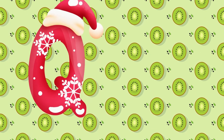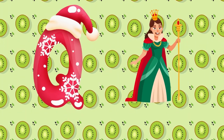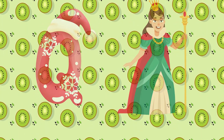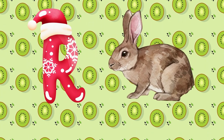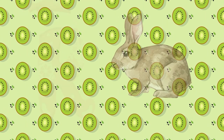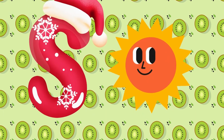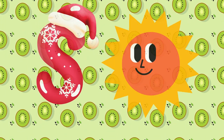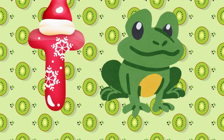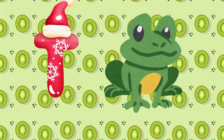Q is for queen, q-q-queen. R is for rabbit, r-r-rabbit. S is for sun, s-s-sun. T is for toad, t-t-toad.